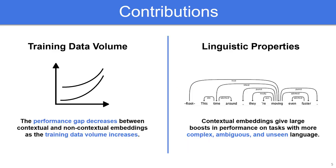We present two key contributions which help explain the performance gap between contextual and non-contextual embeddings. We first find that the performance gap decreases as the amount of available task training data increases, meaning that the value of contextual embeddings tends to decrease in data-rich regimes. We further explain the performance gap in terms of the linguistic properties of the NLP task at hand. At a high level, we show that contextual embeddings give large boosts in performance on more complex, ambiguous, and unseen language.